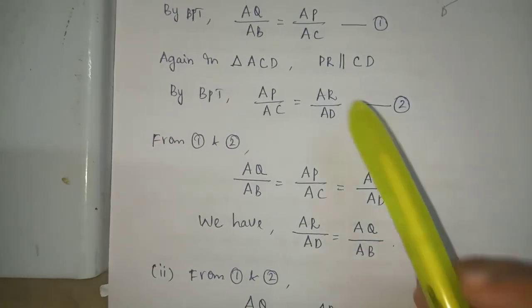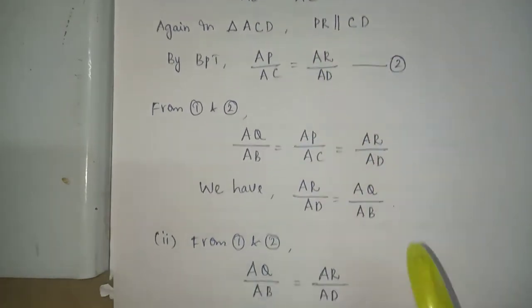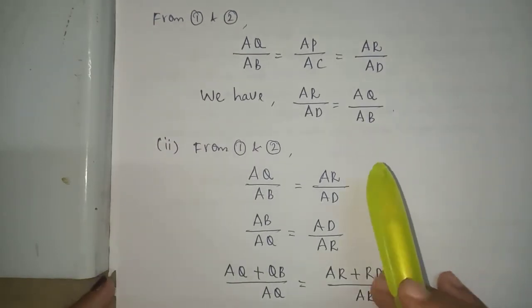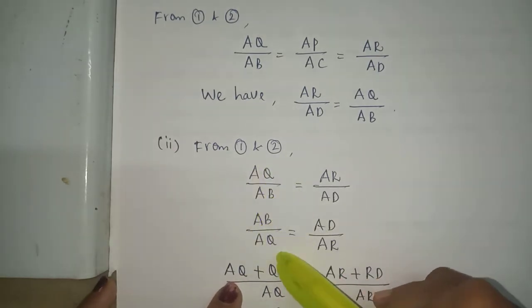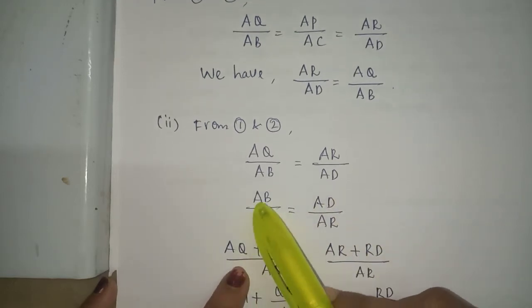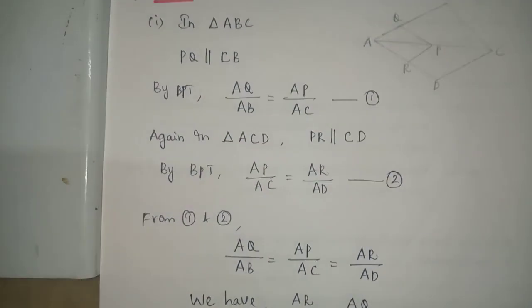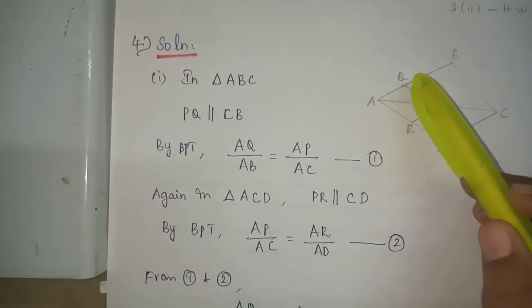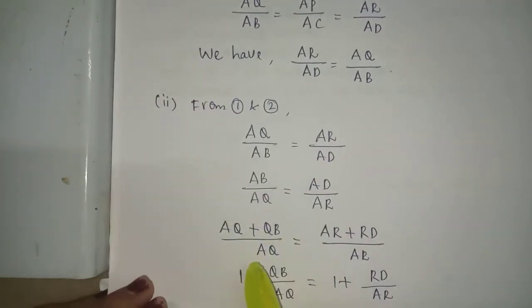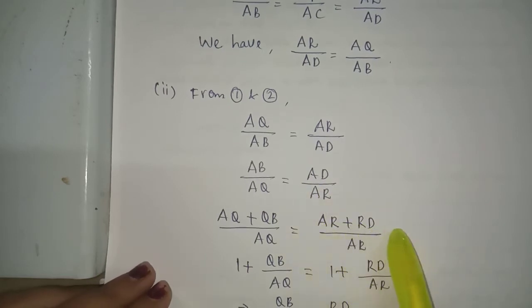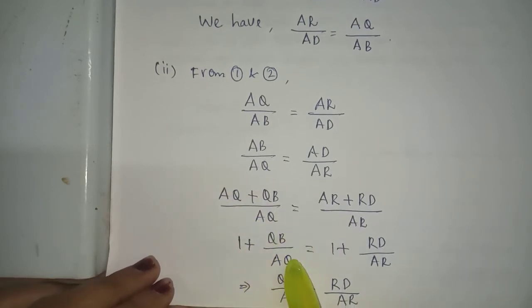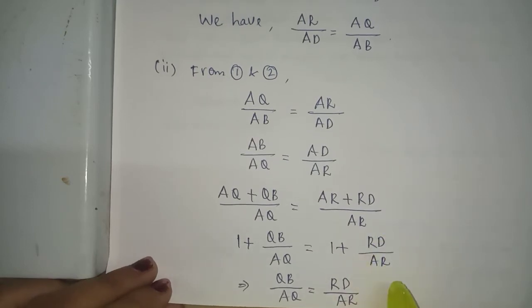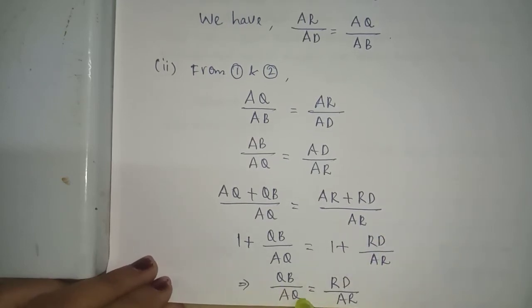For the second subdivision, from equations 1 and 2: AQ by AB is equal to AR by AD. Taking reciprocals: AB by AQ is equal to AD by AR. Since AB equals AQ plus QB, we write (AQ plus QB) by AQ equals (AR plus RD) by AR. This simplifies to 1 plus QB by AQ equals 1 plus RD by AR, giving QB by AQ equals DR by AR.